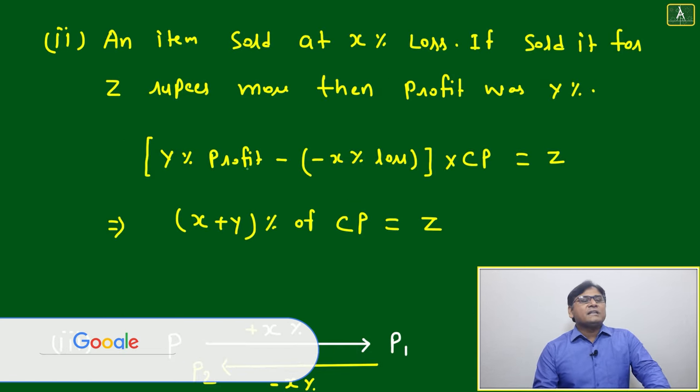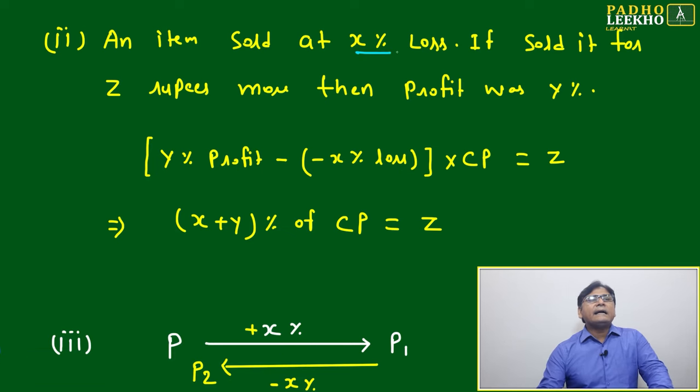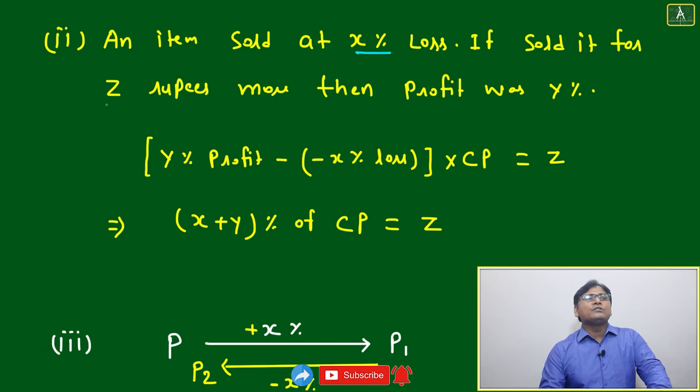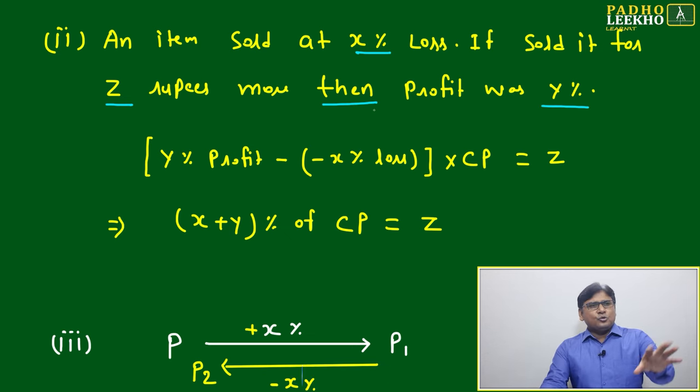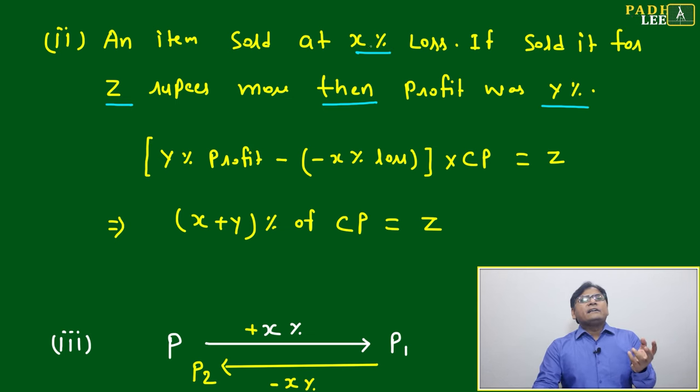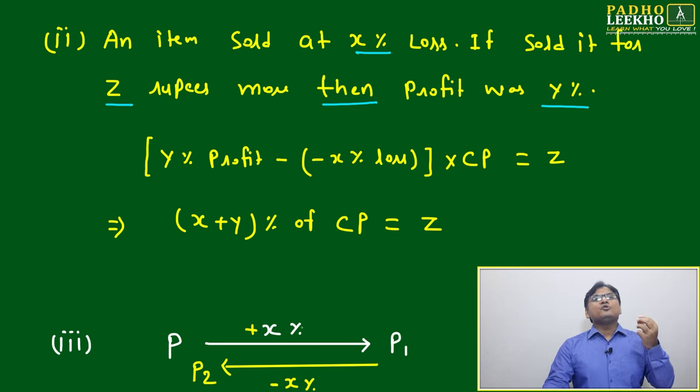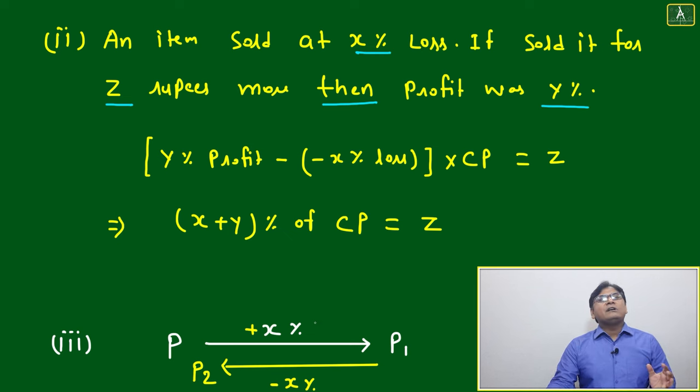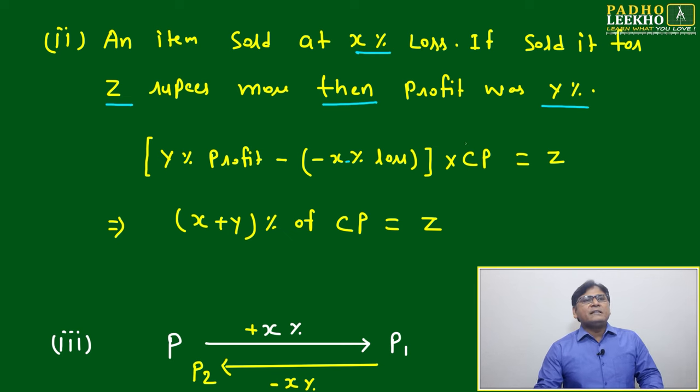Now second fact: an item sold at x percent loss. If sold it for z rupees more, then profit was y percent. Telling you one item has sold, during selling you just incur the x percent loss. Now condition is there: if sold it for z rupees more, like whatever your selling price was, you are just increasing your selling price by z rupees, then profit will be y percent.